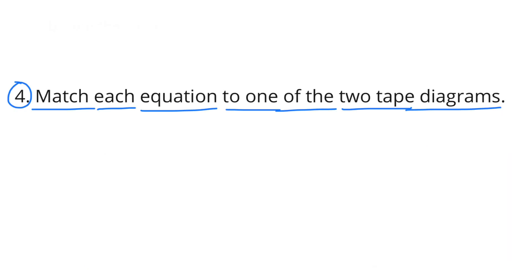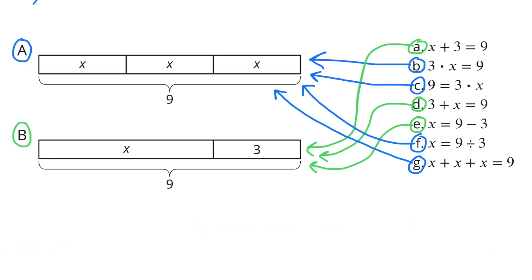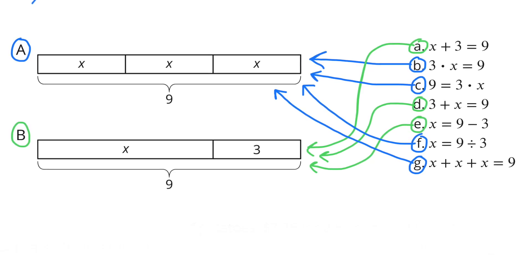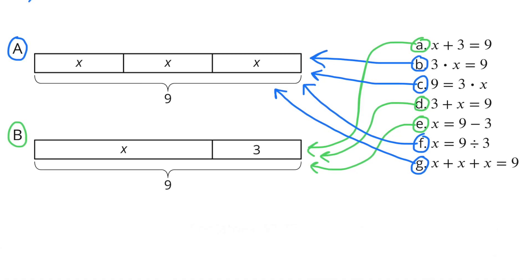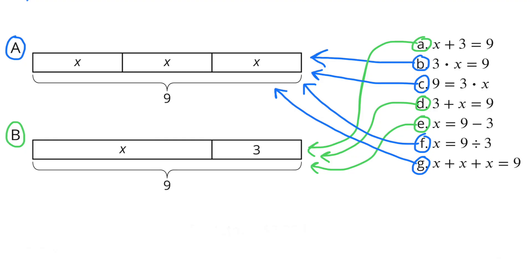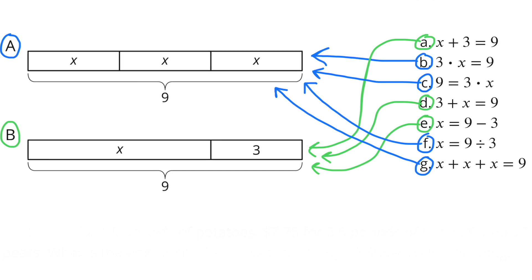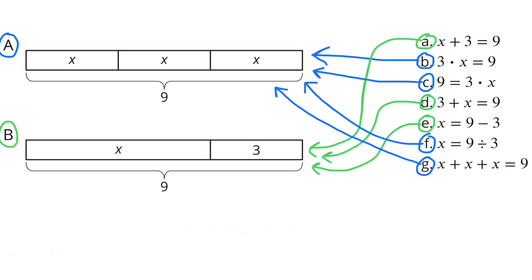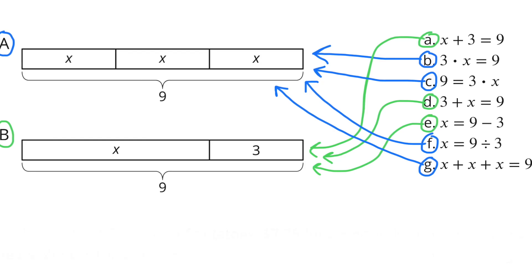Number 4: Match each equation to one of the two tape diagrams. A: x plus 3 equals 9 — matched with diagram B. B: 3 plus x equals 9 — matched with diagram A. C: 9 equals 3 times x — matched with diagram A. D: 3 plus x equals 9 — matched with diagram B.